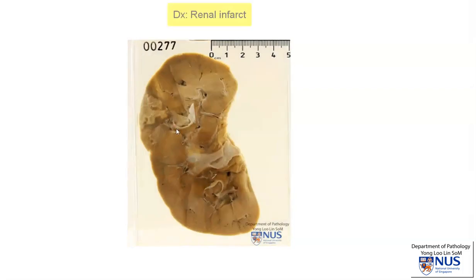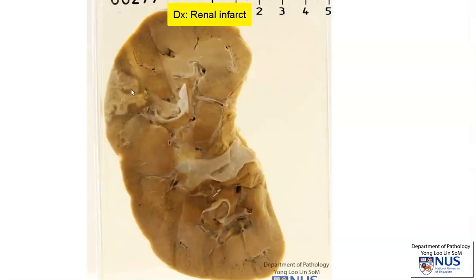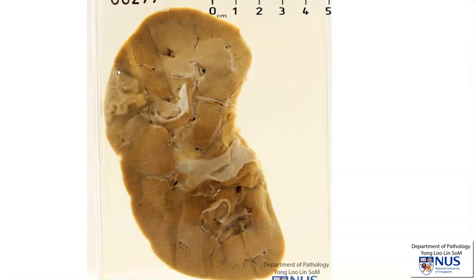So this is a renal infarct. And the reason why the infarct is this shape is because the blood supply comes in here. It's an end-arterial blood supply, hence when there is occlusion of the supplying vessel, this entire area of supply will become infarcted and undergo coagulative necrosis.